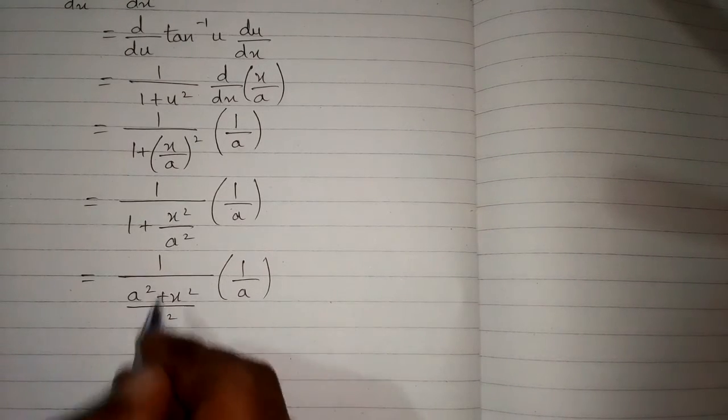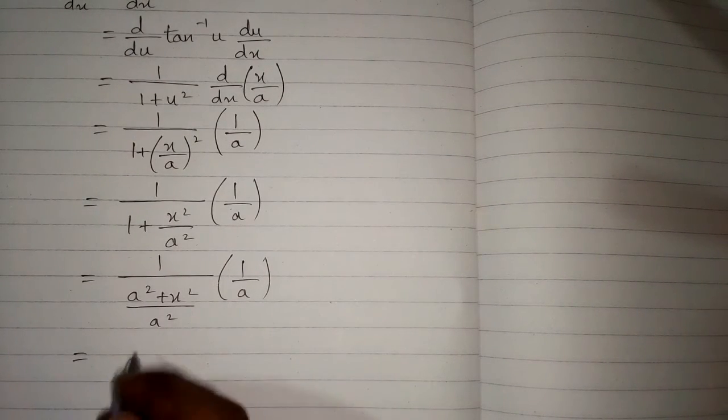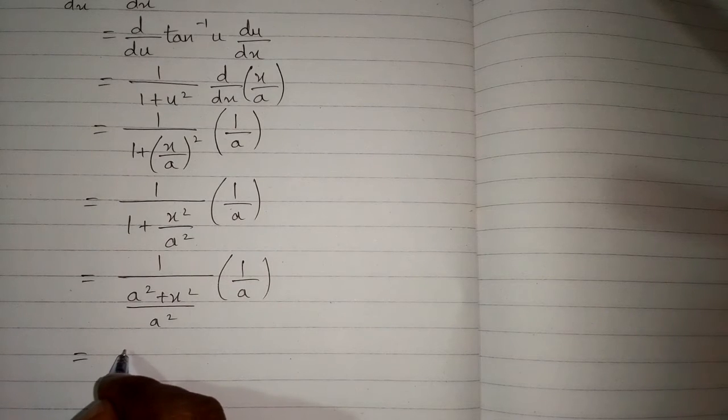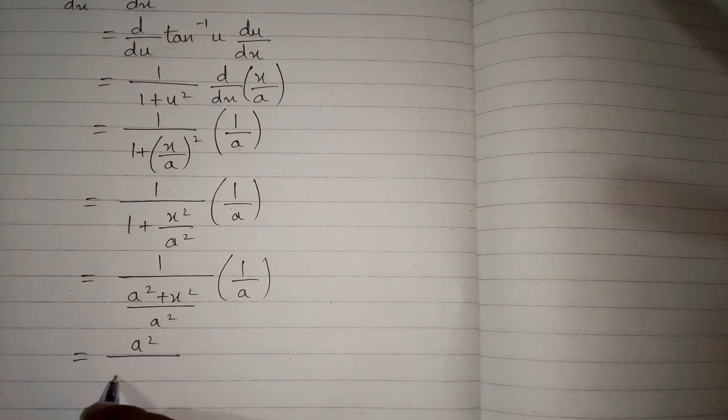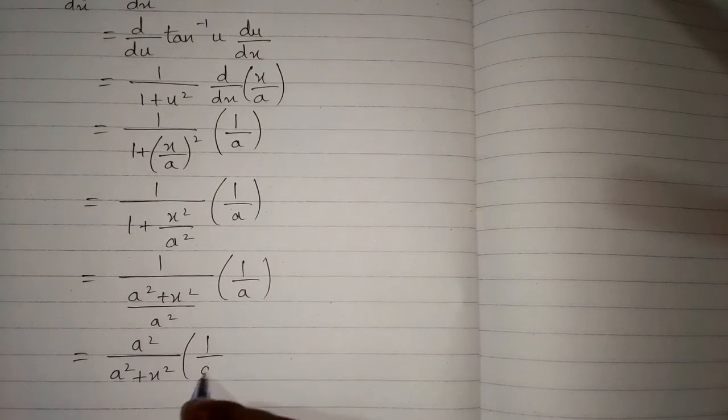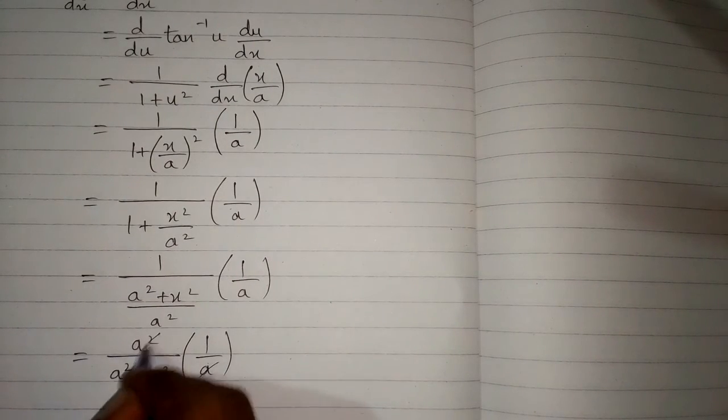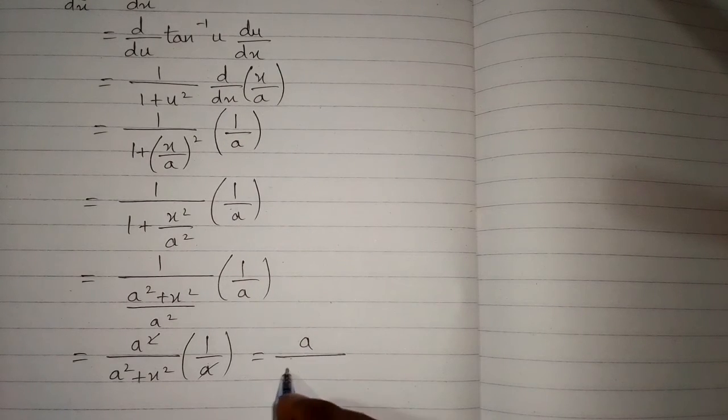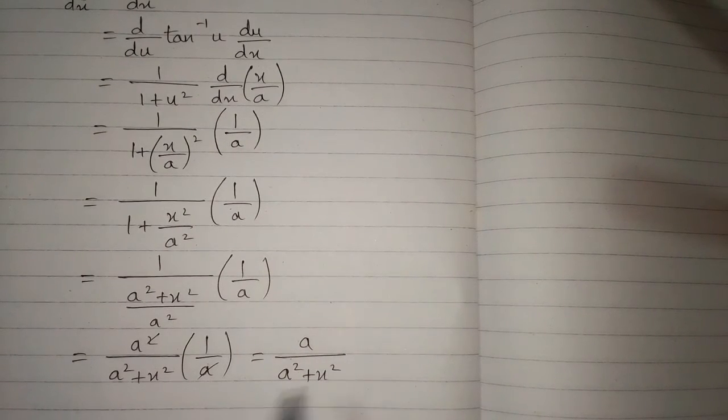And then we take the reciprocal of the denominator. So we have a square upon a square plus x square, multiplied by 1 upon a. And after cancellation the final answer is a upon a square plus x square.